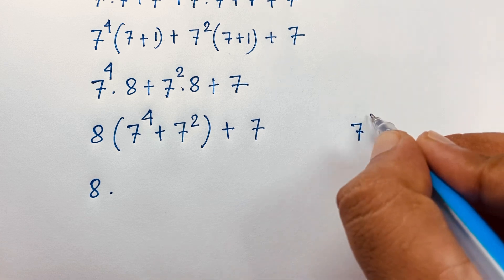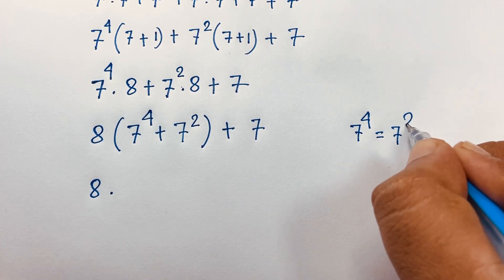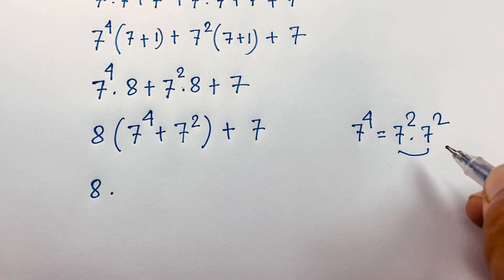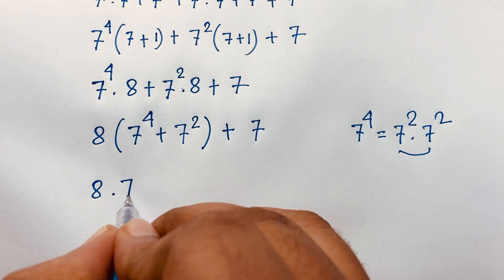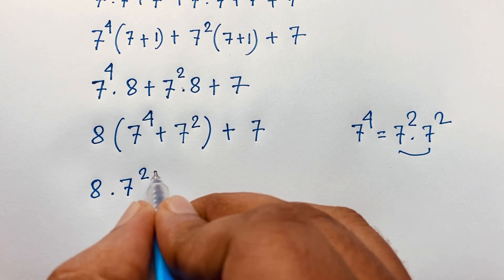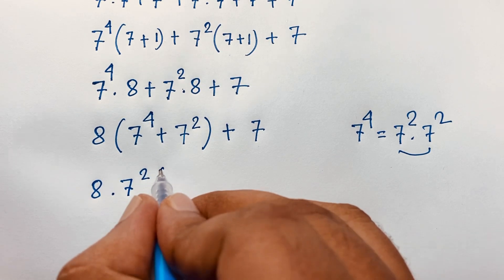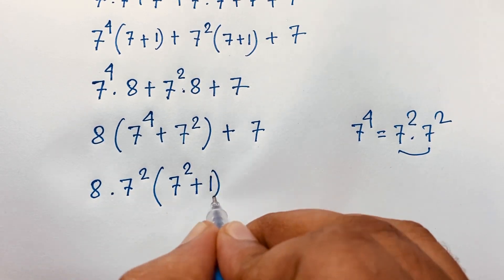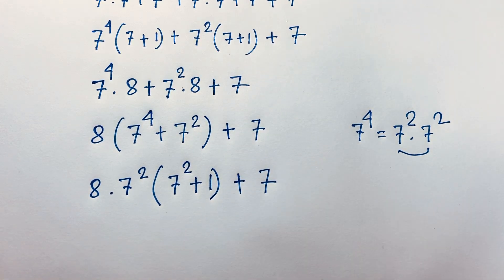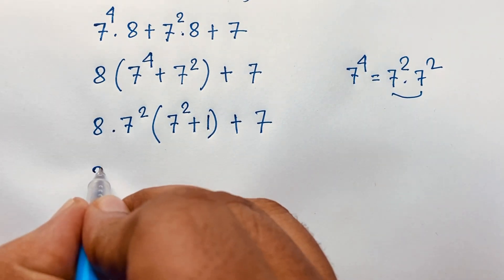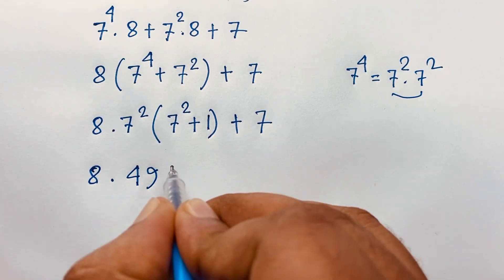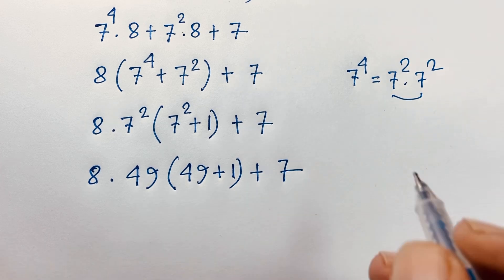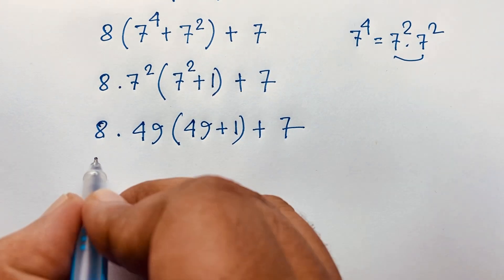Now at this moment you can see here 7 to the power 4 is 7 to the power 2 times 7 to the power 2, since 2 plus 2 equals 4. So 7 to the power 2 is common. If I take 7 to the power 2 as common: here 7 to the power 2 plus 1 — this divided by this it is 1 — and here is plus 7.